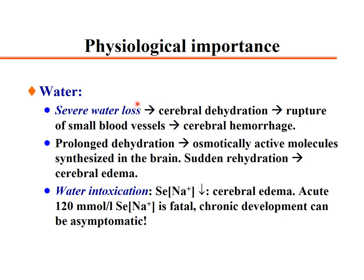Regarding the physiological importance of body water: if water is lost very rapidly, it can cause cerebral dehydration, rupture of small blood vessels, and cerebral hemorrhage. If water is lost gradually, the body can accommodate by producing osmotically active molecules intracellularly, especially in the brain.